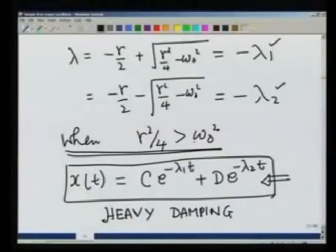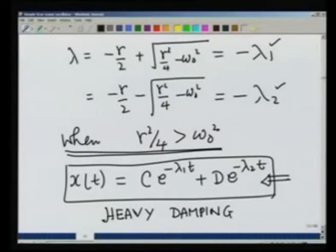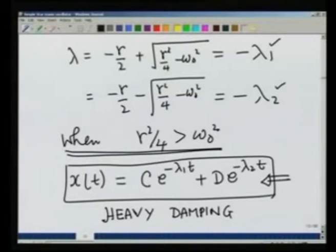Let us focus on heavy damping. Later we will see when gamma square over 4 equals omega 0 square, both lambda 1 and lambda 2 become equal. In that case there seems to be only one solution; we will obtain the other solution by taking the limit of lambda 1 going to lambda 2, and that is known as critical damping. Finally, when gamma square over 4 is less than omega 0 square, that is known as the light damping case, in which we will obtain oscillatory solution.